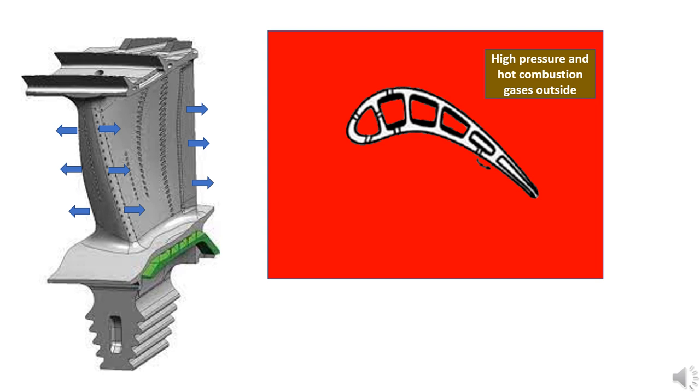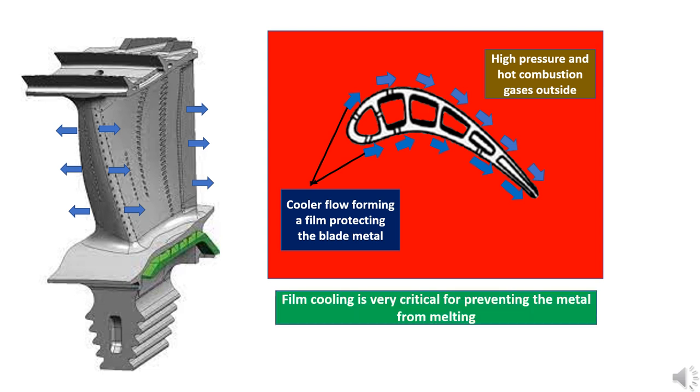So when the air comes out of the holes it will be forced to flow over the surface of the blade. Now the cooler air from inside forms a cover or film over the entire blade surface. This cooler air film protects the blade from the external extreme temperature continuously. This mechanism is called film cooling.